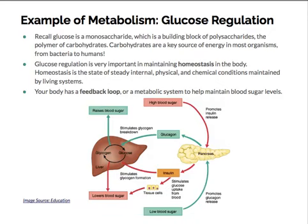An example of metabolism is glucose regulation. Glucose is a monosaccharide, which is a building block of polysaccharides, the polymer of carbohydrates. Carbohydrates are a key source of energy in most organisms, from bacteria to humans. Glucose regulation is very important in maintaining homeostasis — the state of steady internal physical and chemical conditions maintained by living systems. Your body has a feedback loop or metabolic system to help maintain blood sugar levels.